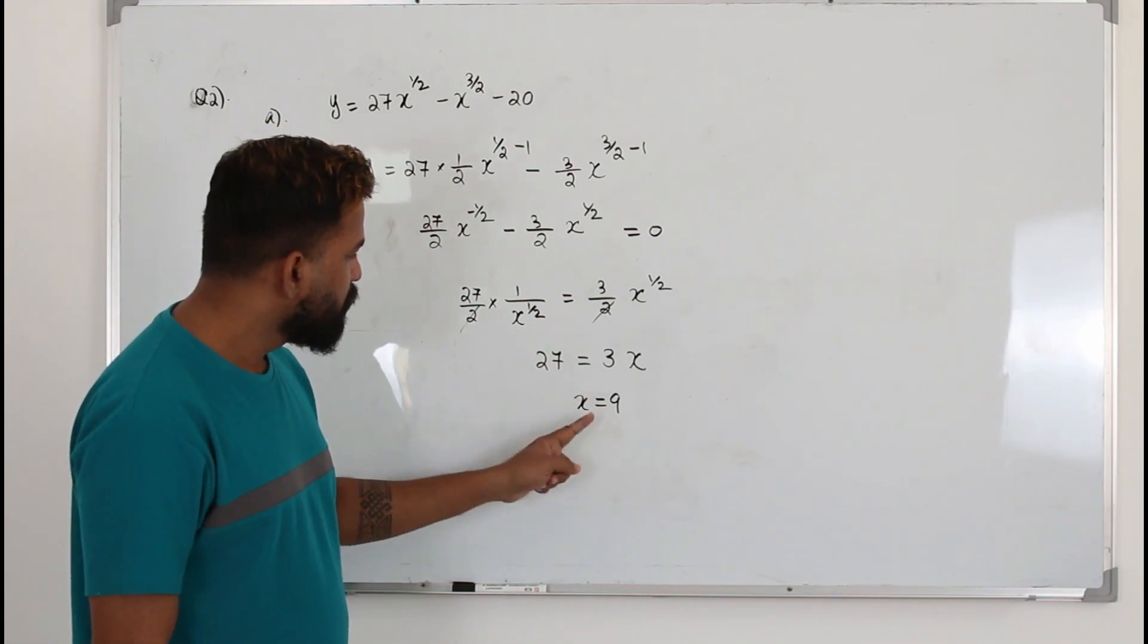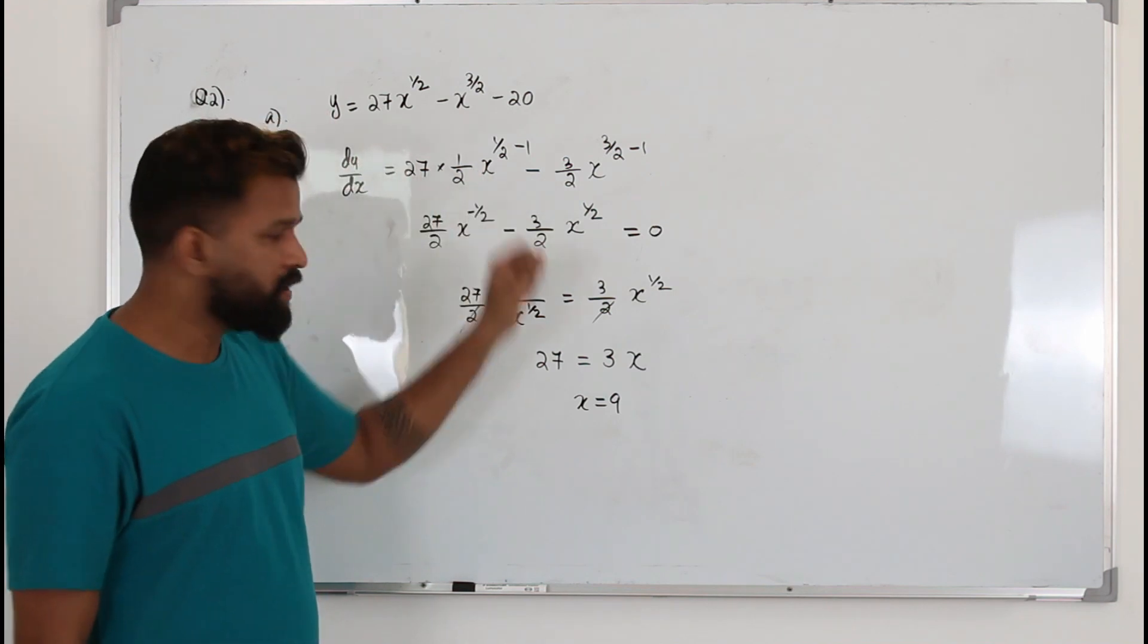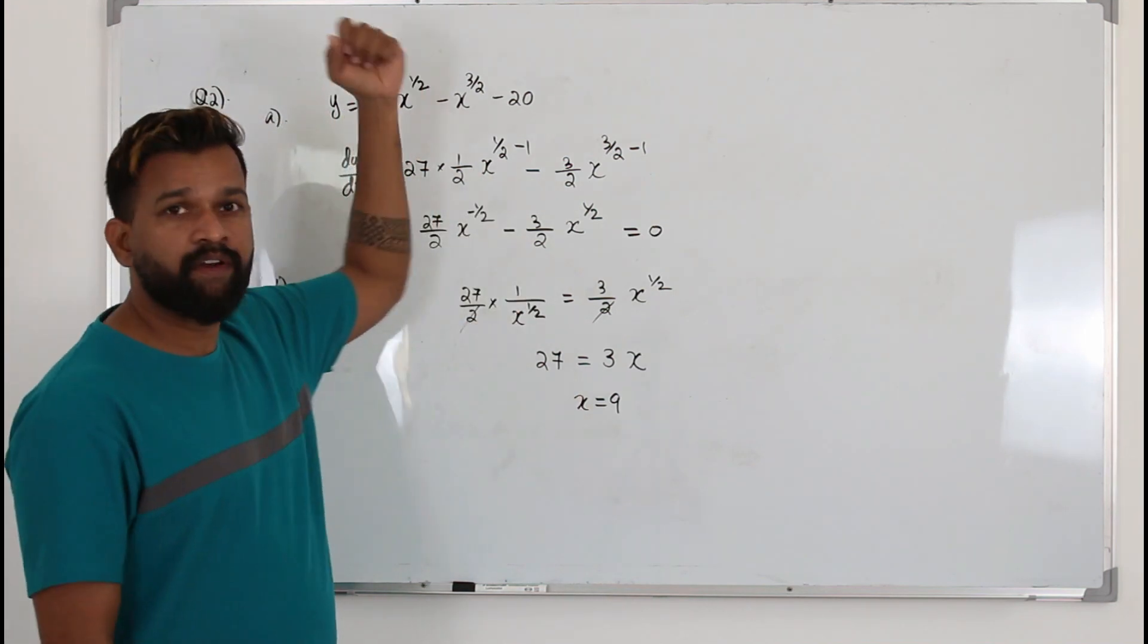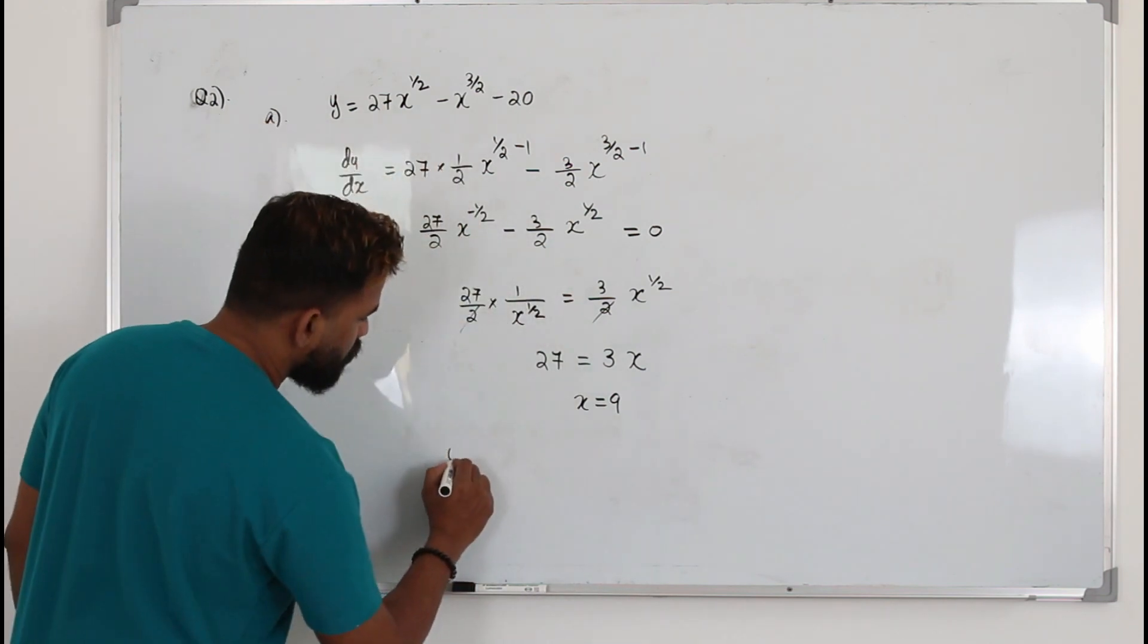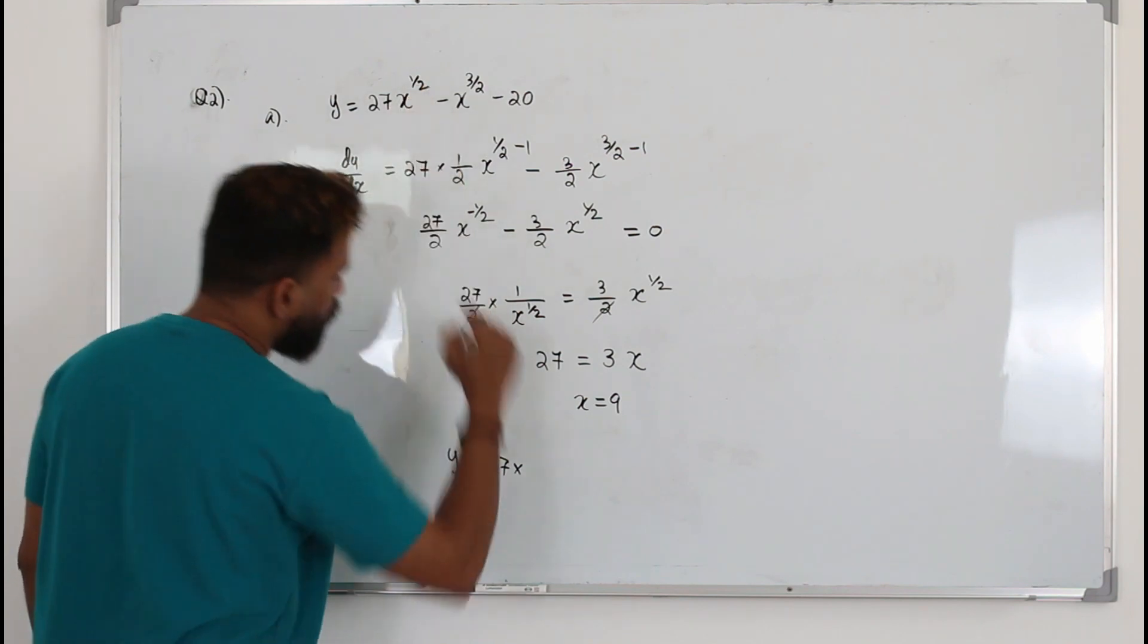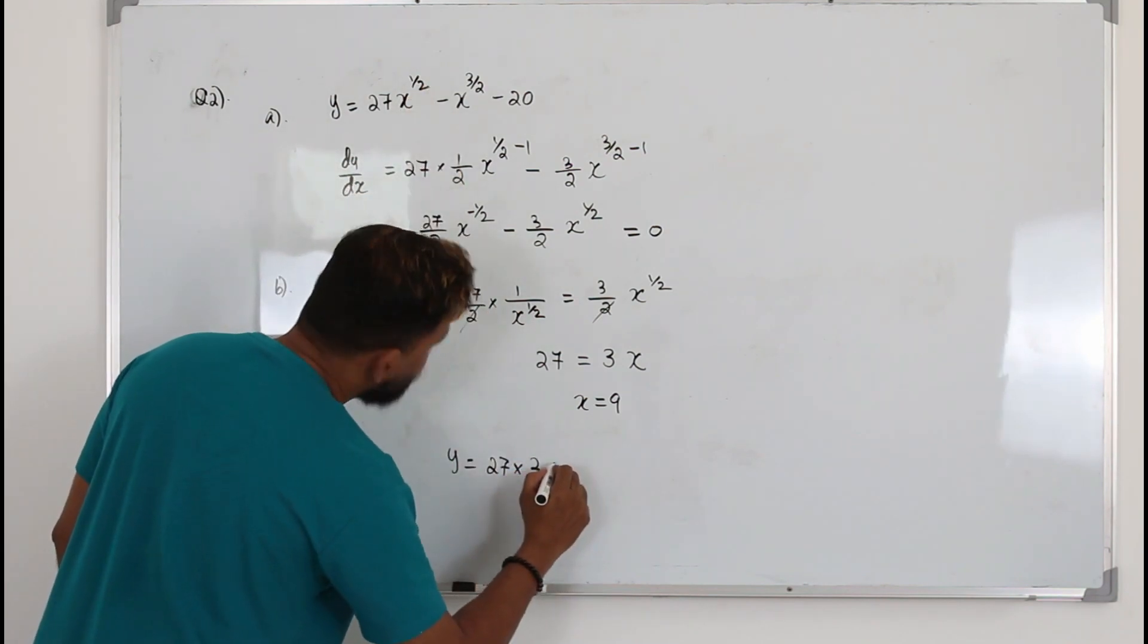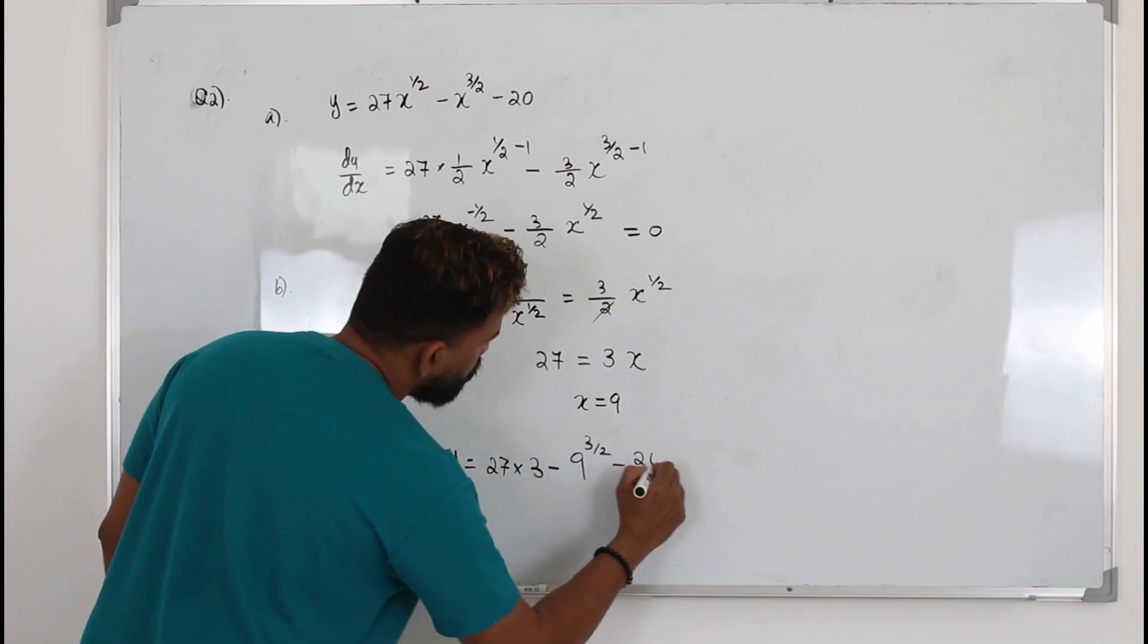Once you got the x value, put the x value back into the original function, not in the first derivative. You have to put it in the original function to find the y coordinate. Substitute here. So your y will be 27 times 9 power half which is square root of 9, 3, minus 9 power 3 over 2 minus 20.